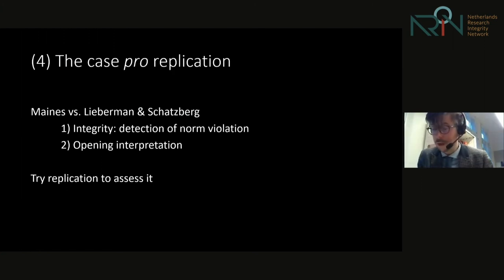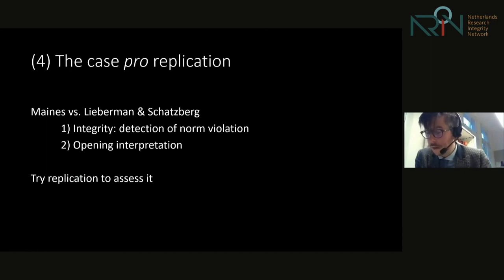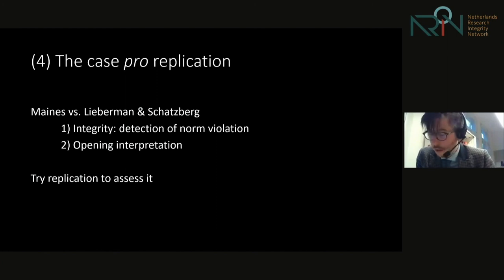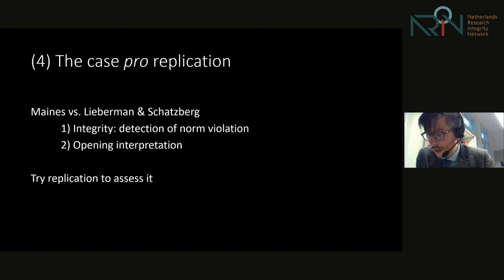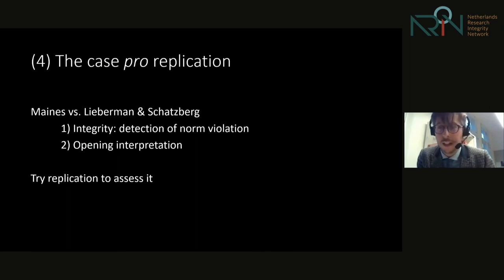An increase in integrity would be a first possible benefit of replications. Second, if we are more charitable to Maines and do not understand this as a binary fraud-or-not case, but rather as one of degree, we would be looking at a very bold interpretation of source material. This raises a new question about the limits of interpretation: at what point does an interpretation become too bold and border upon questionable research practices? My argument for the value of replication runs counter to both aforementioned positions: I would allow for multiple valid interpretations based on the same source material, but that does not mean that every answer is valid — there are limits to these interpretations. Replication studies are a way to start the investigation into the limits of these interpretations.